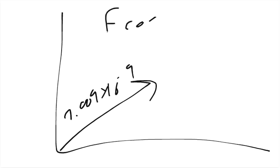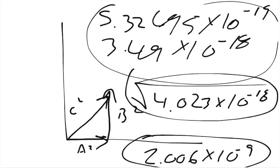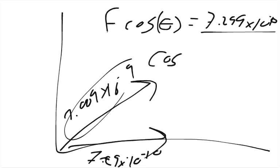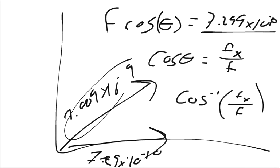So we can say this is our force of 2.009 times 10 to the negative 9th. So cosine theta equals, and then we can plug in this force. We said it was 7.299 times 10 to the negative 10th. And so then you divide by this force, and you'll get cosine theta equals the f of x over the f. Then you do cosine to the negative 1 of f of the x over the f, and this will equal your resultant angle, which is 68.66 degrees.